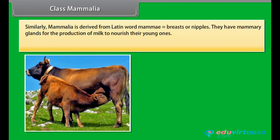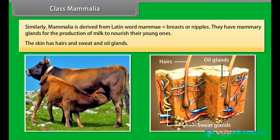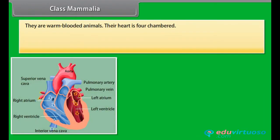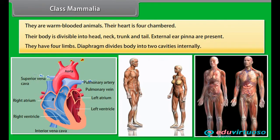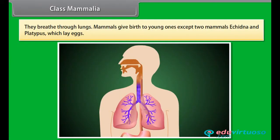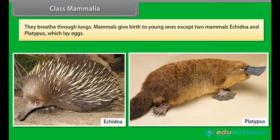Class Mammalia. Mammalia is derived from Latin word mamma, meaning breasts or nipples. They have mammary glands for the production of milk to nourish their young ones. Their skin has hairs and sweat and oil glands. They are warm-blooded animals. Their heart is four-chambered. Their body is divisible into head, neck, trunk, and tail. External ears, or pinnae, are present. They have four limbs. Diaphragm divides the body into two cavities internally. They breathe through lungs. Mammals give birth to young ones except two mammals, Echidna and Platypus, which lay eggs.